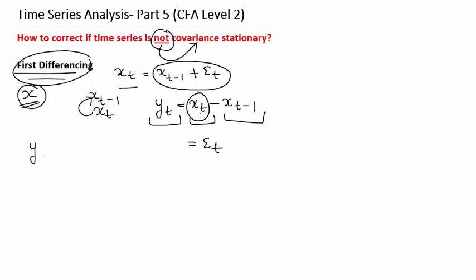We get y_t equals the error term. This is the time series obtained after the process of first differencing. We performed first differencing because we wanted to make the time series covariance stationary, and we now have a new time series y_t. We need to check whether this time series is covariance stationary.